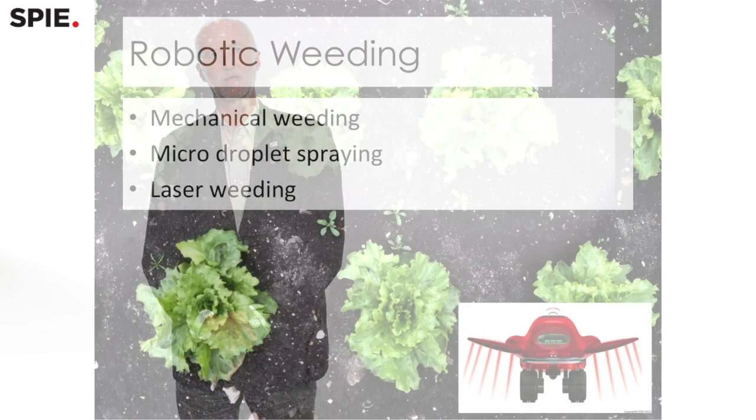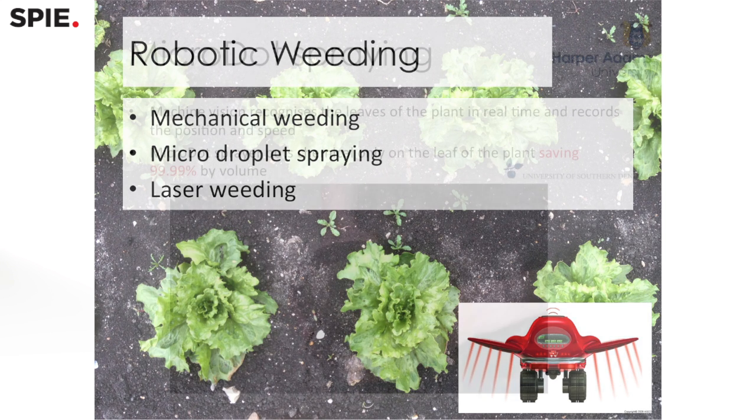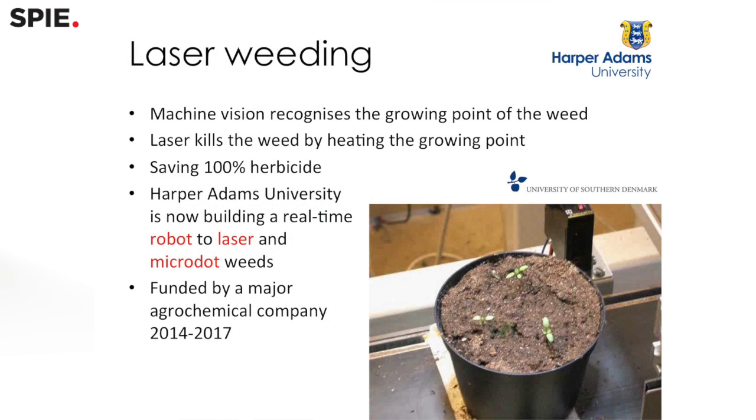My preferred method at the moment is to use machine vision to recognize up to 26 different species of weeds, measure the leaf area of the weed, the position and the biomass, and then be able to do one of two things.